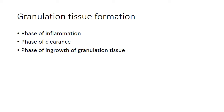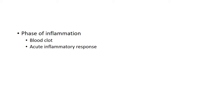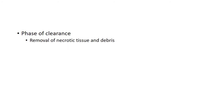Granulation tissue formation involves three phases: phase of inflammation, phase of clearance, and phase of in-growth of granulation tissue. In the phase of inflammation, soon after trauma, a blood clot forms, followed by an acute inflammatory response — these happen within the first 24 hours. In the phase of clearance, necrotic tissue and debris are removed by proteolytic enzymes from neutrophils, autolytic enzymes from dead tissue cells, and phagocytic activity of macrophages.